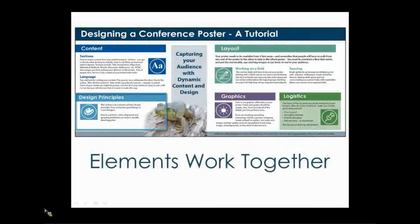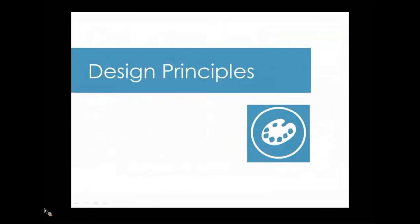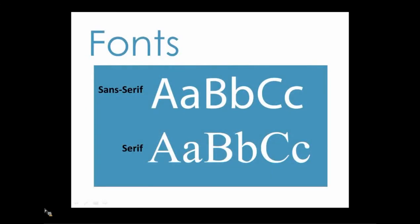Design principles go hand in hand with the layout of your poster. First, a little background on the two main types of fonts — Sans Serif and Serif. Sans Serif fonts are fonts without the horizontal elements at the bottom of letters, like Arial, Calibri, Helvetica. They form more distinct words and are better for headlines and large bold text. Serif fonts have extra elements at the tips and are generally used for large swatches of body text. The most common serif font is Times New Roman. Don't be afraid to use two types of fonts — Sans Serif for headers and titles, and Serif fonts for your body text.